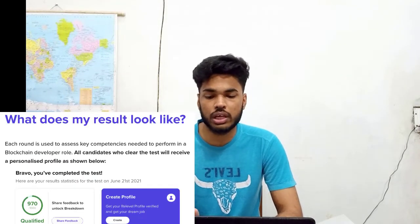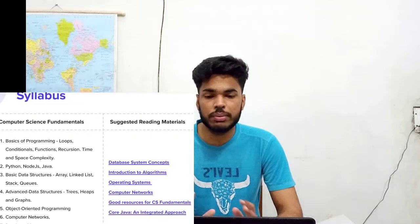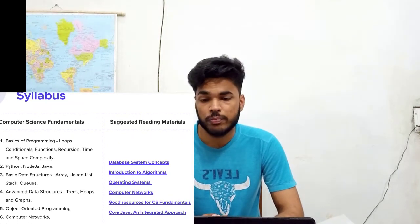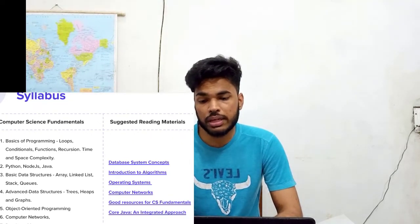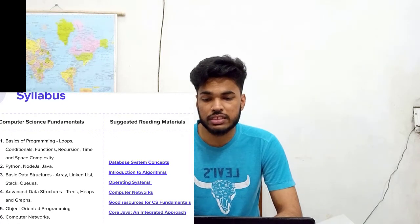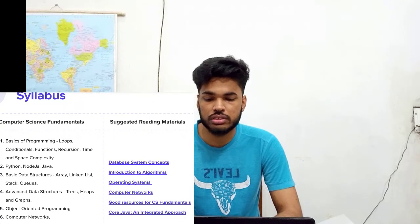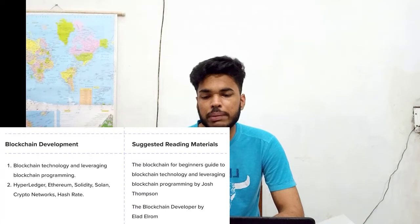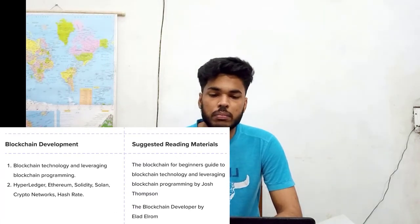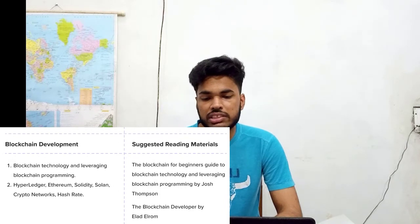This is the syllabus — you may take a screenshot here. From computer science fundamentals, topics include basics of programming, Python, Node.js, Java, basic and advanced data structures, OOPs concepts, computer networking, DBMS, and operating systems. From the blockchain development part, topics include blockchain technology, blockchain programming, Hyperledger, Ethereum, Solidity, Solana, crypto networks, and Hnet.